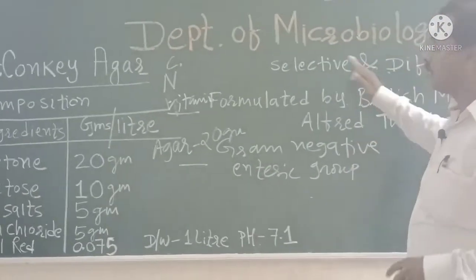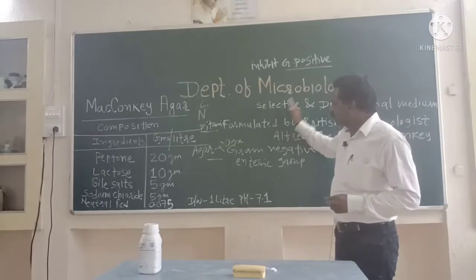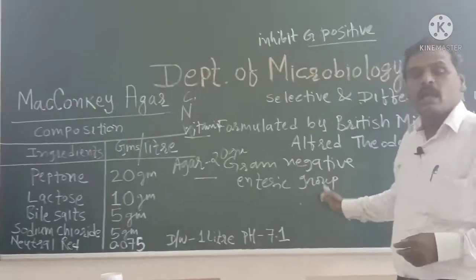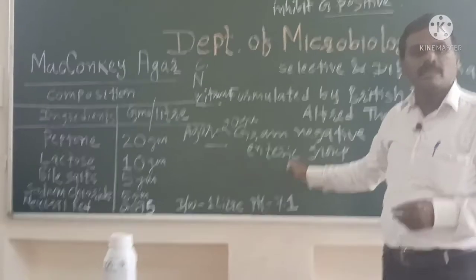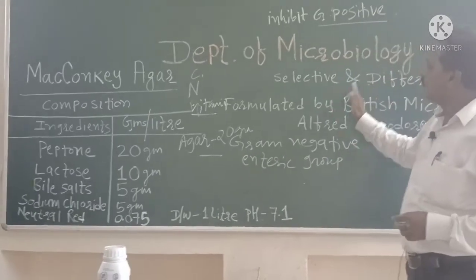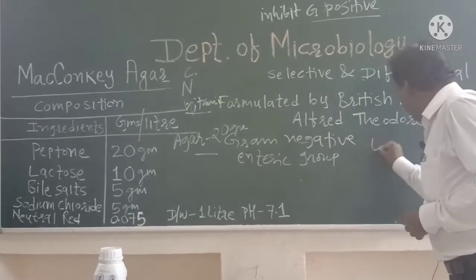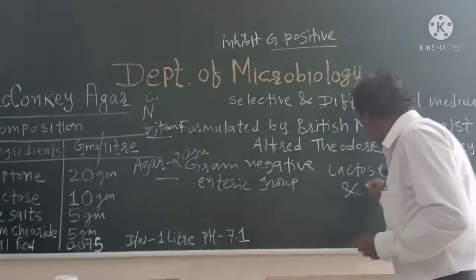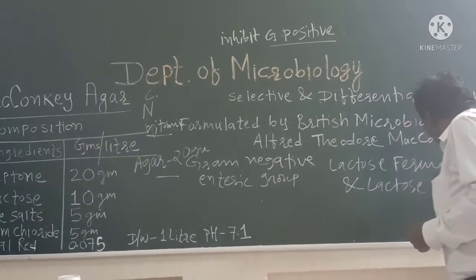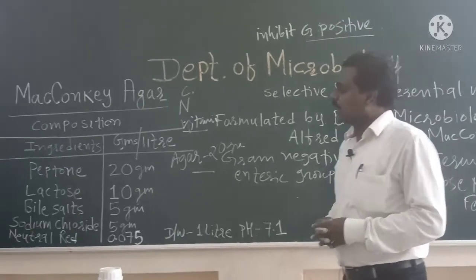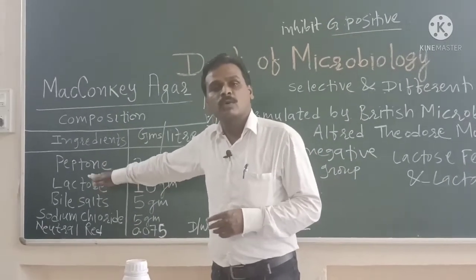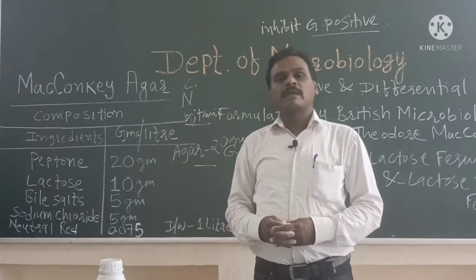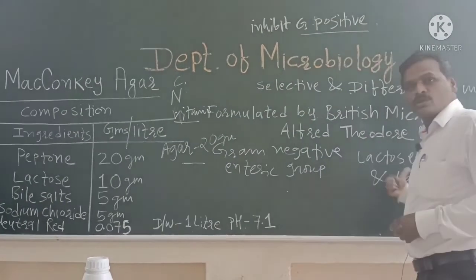This is the composition of MacConkey's Agar. As noted, MacConkey's Agar is selective as well as differential. It is selective for the isolation of gram-negative bacteria and the enteric group, particularly members of the Enterobacteriaceae family. It is a differential medium because it differentiates the bacteria into lactose fermenters and lactose non-fermenters, as the medium contains the fermentable sugar lactose.